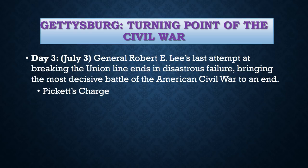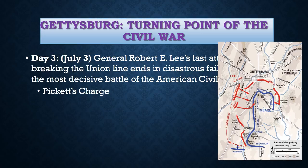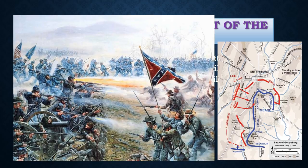Gettysburg is known as the turning point of the Civil War. On the third day, General Robert E. Lee's last attempt was to break the Union line, and it ended in a disastrous failure — bringing the most decisive battle of the Civil War to an end. This ended with Pickett's Charge. On July 3rd, Lee had failed on the right and the left, so he planned an assault on Meade's center with a 15,000-man strong column under General George Pickett of Virginia.